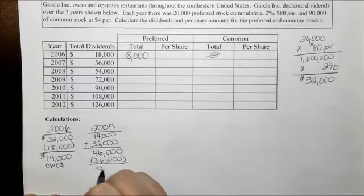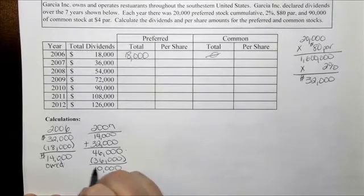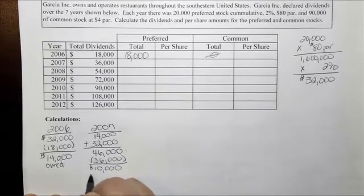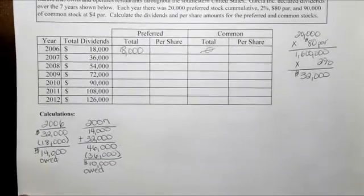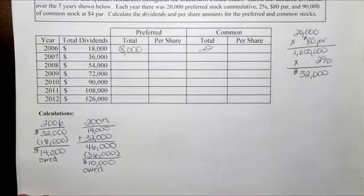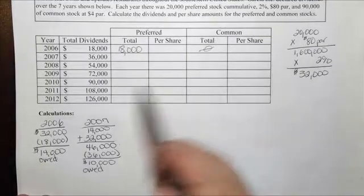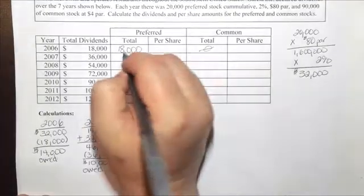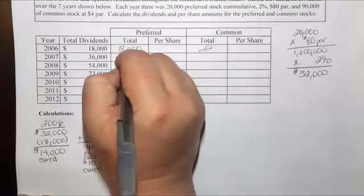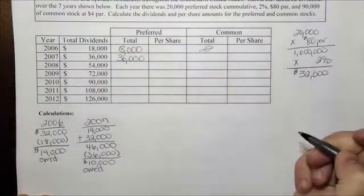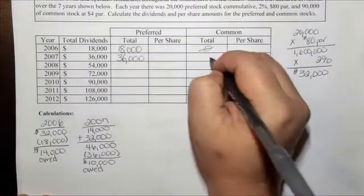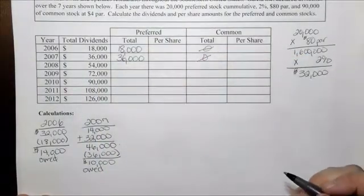That leaves a $10,000 balance owed to preferred stockholders for the following year. So in 2007, the preferred stockholders get all $36,000 and again the common stockholders get zero.